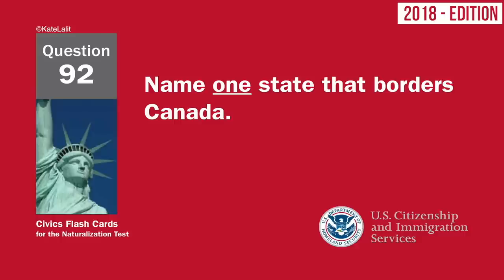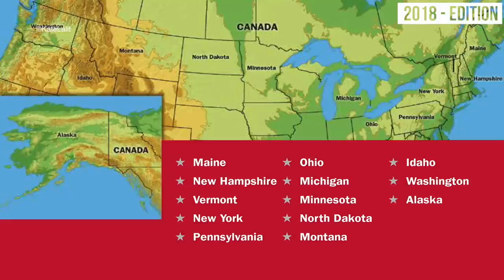Name one state that borders Canada. Maine. New Hampshire. Vermont. New York. Pennsylvania. Ohio. Michigan. Minnesota. North Dakota. Montana. Idaho. Washington. Alaska.